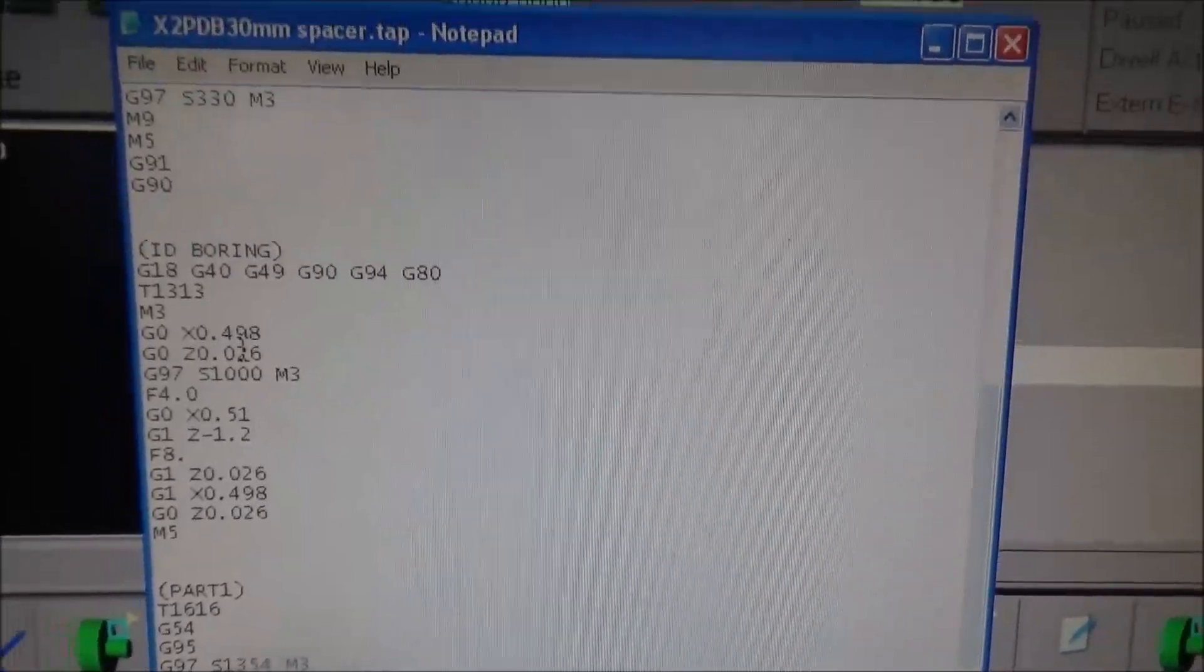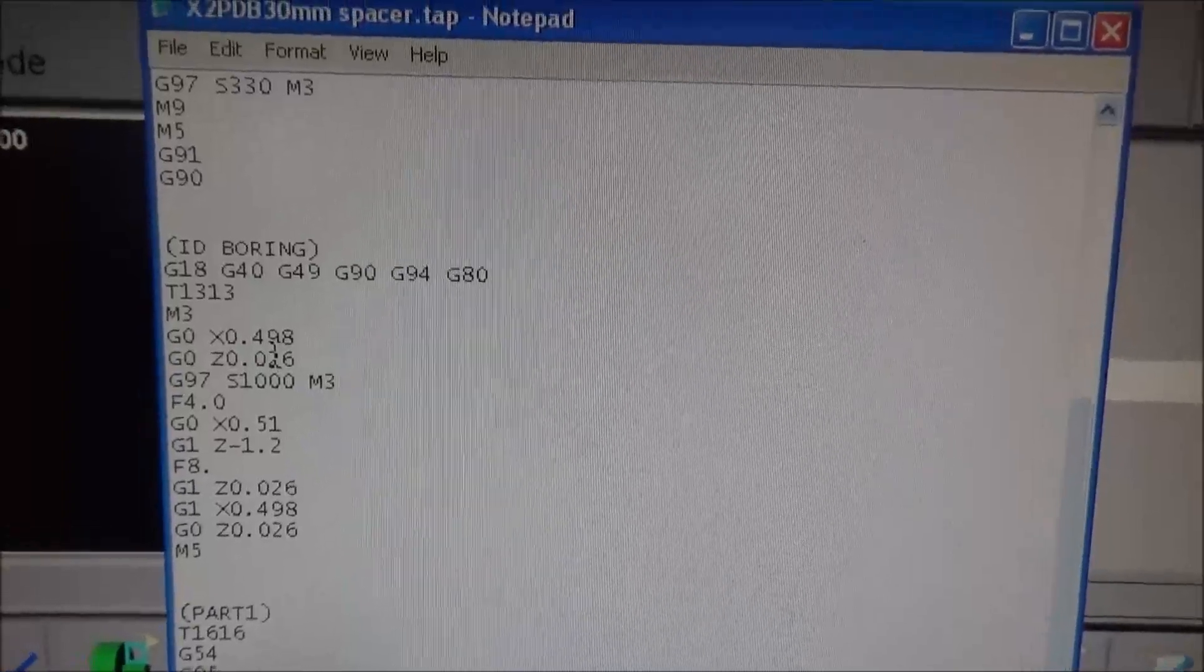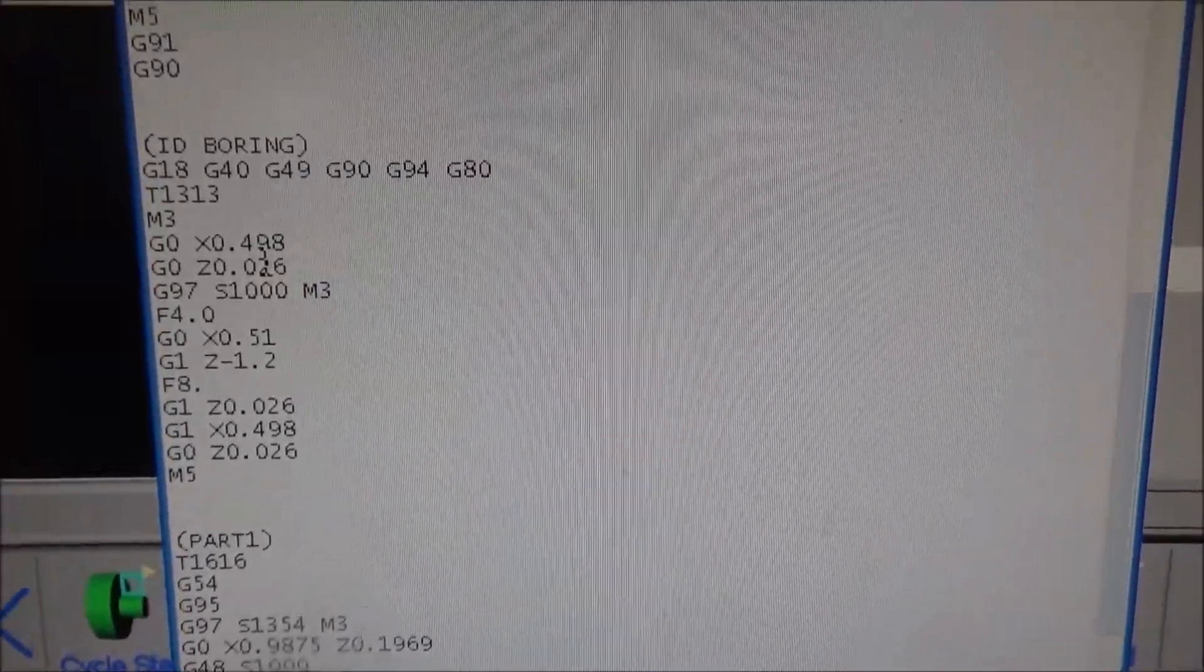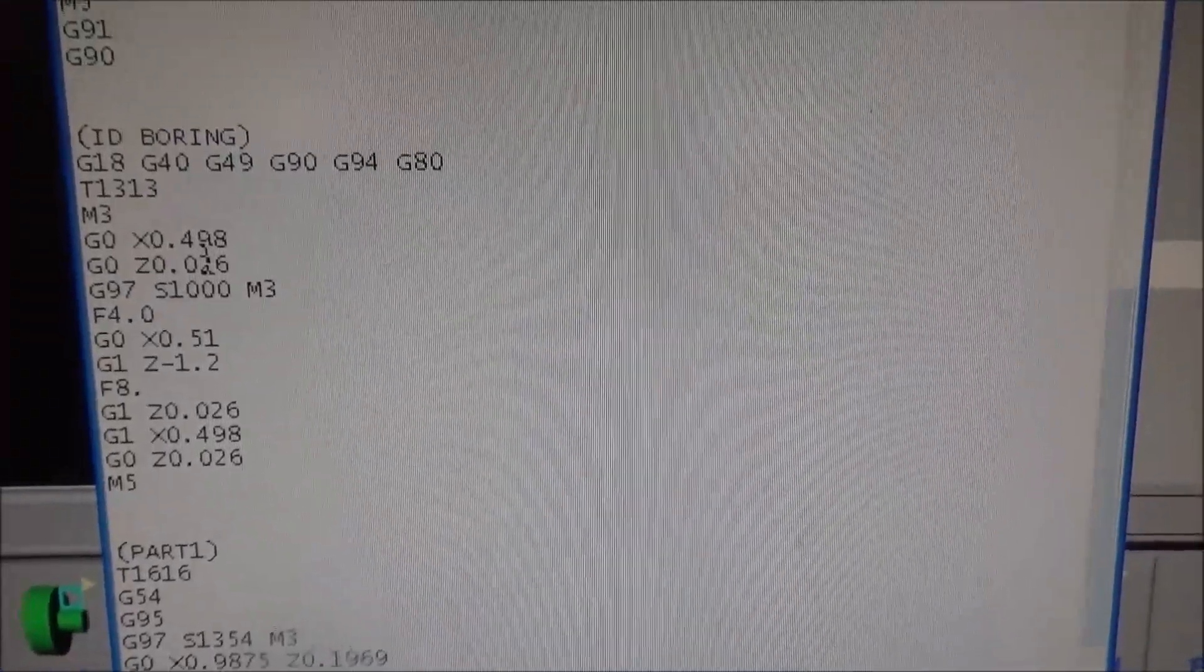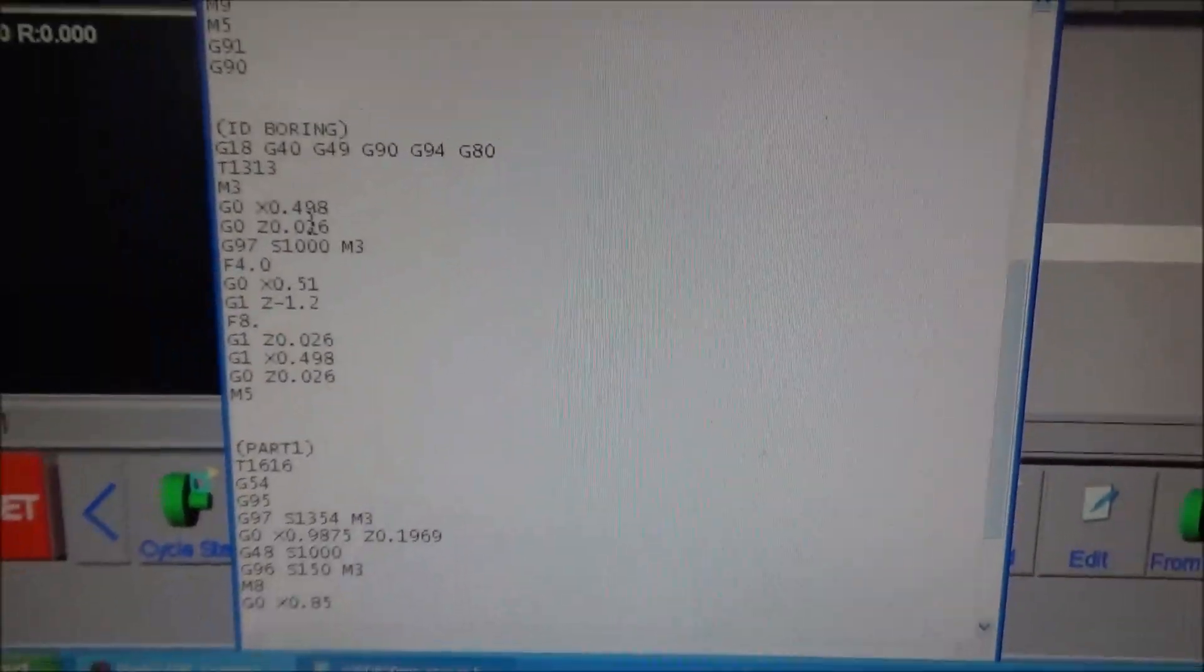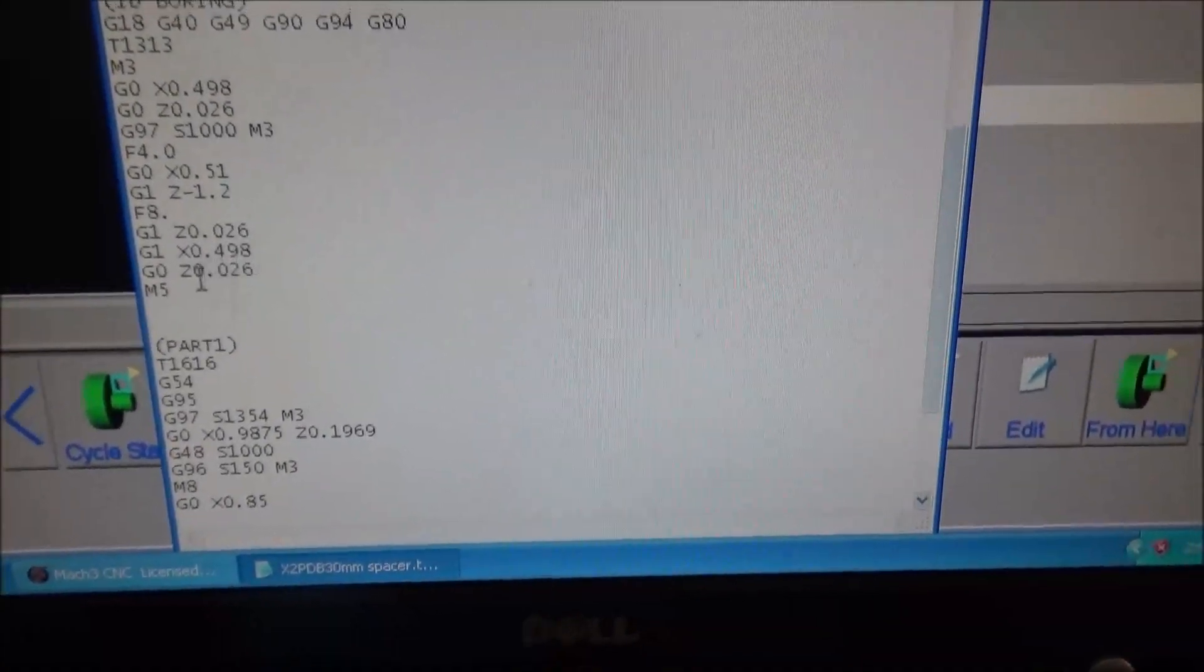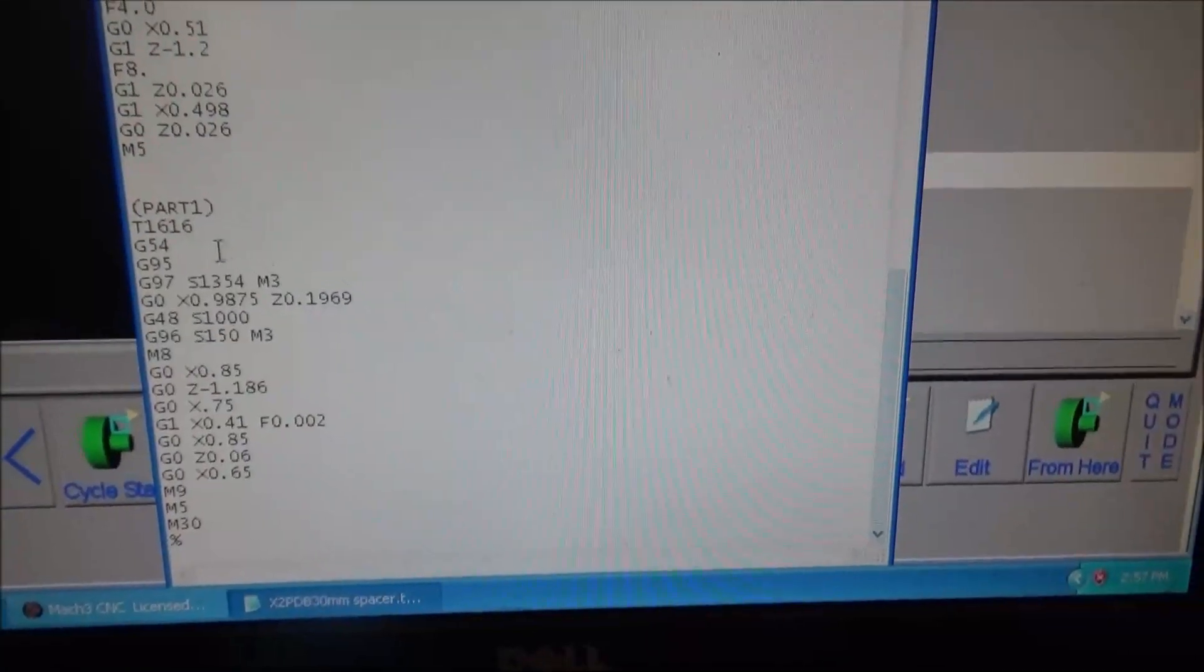Our start position is .498. We're going to move Z, set our speed, our feed rate. And then we're going to go to X.51 and Z minus 1.2. Then we're going to change our feed rate, back out, stop. And then we move to our parting operation.